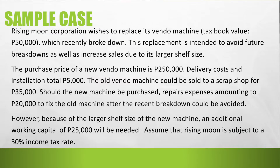Let us proceed to the following sample case. Rising Moon Corporation wishes to replace its Vendo machine, which has a tax book value of $50,000 and recently broke down. This replacement is intended to avoid future breakdowns as well as increase sales due to its larger shelf size. The purchase price of the new Vendo machine is $250,000; delivery cost and installation total $5,000. The old Vendo machine could be sold to a scrap shop for $35,000. Should the new machine be purchased, repair expenses of $20,000 to fix the old machine could be avoided. However, because of the larger shelf size, an additional working capital of $25,000 will be needed. Rising Moon is subject to a 30% income tax rate.